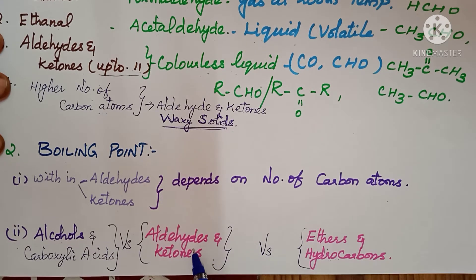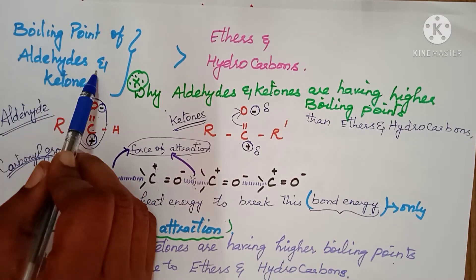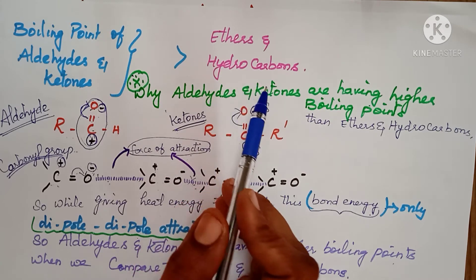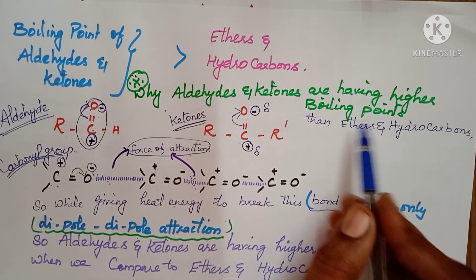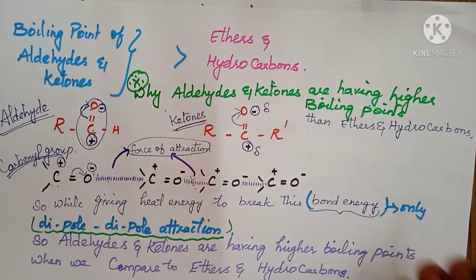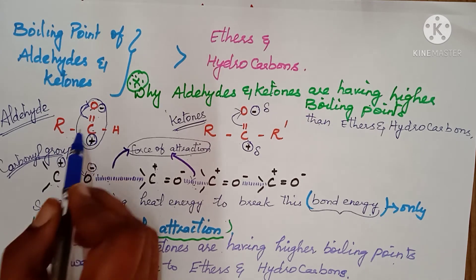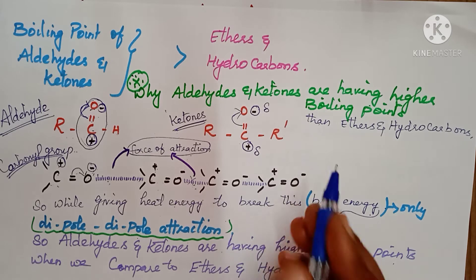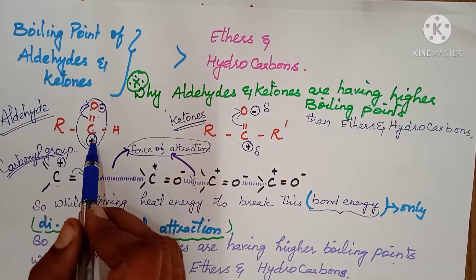The boiling point of aldehydes and ketones is usually higher than ethers and hydrocarbons. Why? In the carbonyl group C=O, oxygen is more electronegative than carbon. The carbonyl group is the backbone of aldehydes and ketones. Oxygen pulls the electrons towards itself, making it electronegative and carbon electropositive — so it is a polar bond.